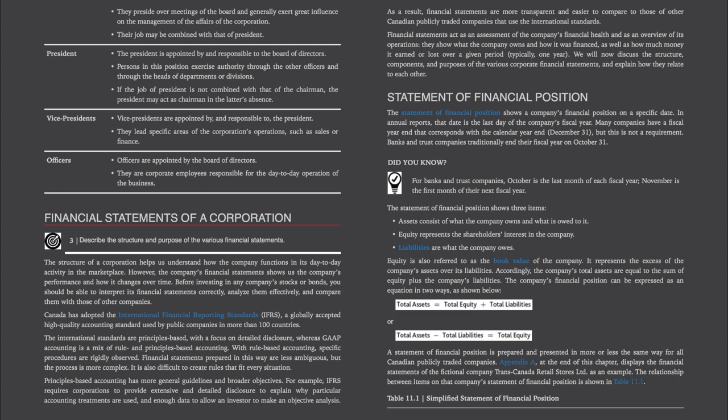The Statement of Financial Position shows a company's financial position on a specific date. In annual reports, that date is the last day of the company's fiscal year. Many companies have a fiscal year end that corresponds with the calendar year, December 31st, but that is not a requirement.